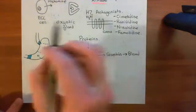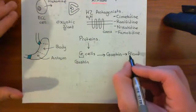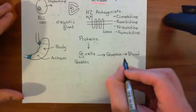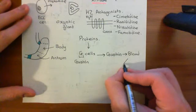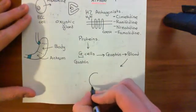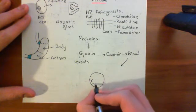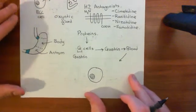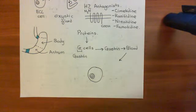Well, it's going to find its way to the enterochromaffin-like cells. What's going to happen is the gastrin is going to come out of the blood at the enterochromaffin-like cells. So now it's found its way to an enterochromaffin-like cell, and basically gastrin acts on a receptor known as a cholecystokinin-2 receptor.